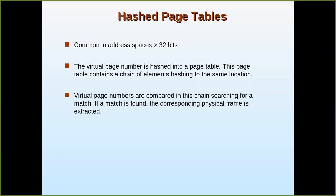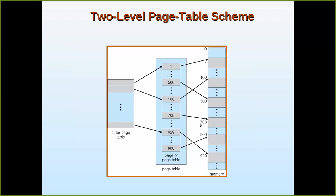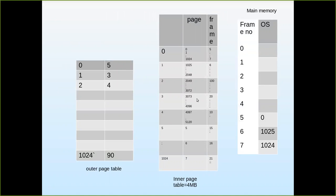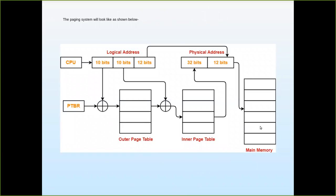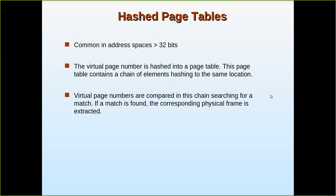So the virtual page number, when I say virtual page number, it is nothing but the logical page number which the CPU generates. It is hashed into the page table. This page table contains a chain of elements hashing to the same location. In the previous case, the page table itself was very big. But now it's not like that. We are going to keep a simple page table in the main memory in one frame itself. The virtual page number generated by the CPU is hashed into the page table. This page table contains a chain of elements hashing to the same location.